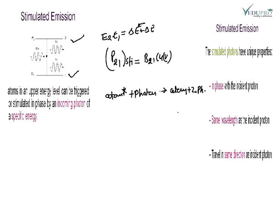तो stimulated emission के जो unique properties हैं: the first is — in phase with the incident radiation, जिस तरह से incident radiation का phase होता है, stimulated emission में भी उसका phase same होगा। दूसरी चीज — same wavelength as incident radiation, जैसे radiation उसपे incident होती थी, उसी wavelength की radiation उसमें से out होगी, and it travels in the same direction as incident radiation. And this is the unique property of photons, especially in the stimulated emission case.